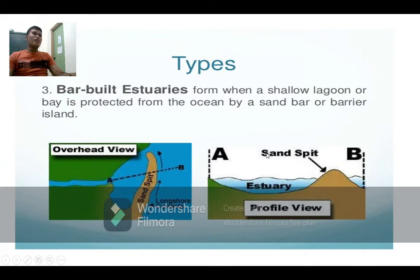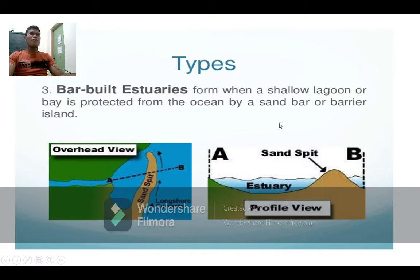The third type is the bar-built estuary. It is formed when a shallow lagoon or bay is protected from the ocean by a sandbar or barrier island.